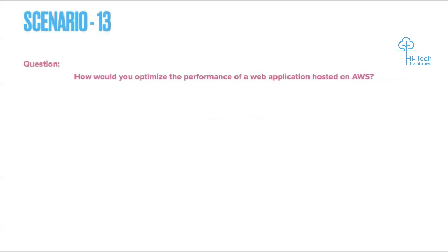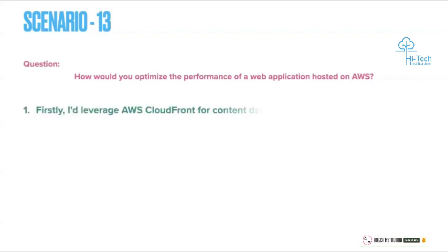Scenario 13: How would you optimize the performance of an AWS application? Imagine you have a web application hosted in AWS — how do you optimize its performance? First, I would leverage AWS CloudFront for content delivery and caching to reduce latency.